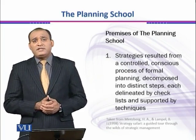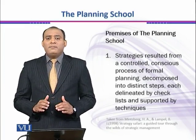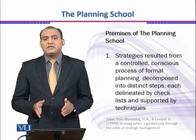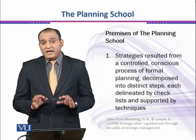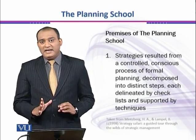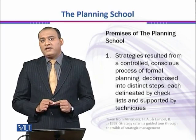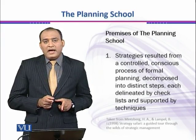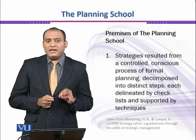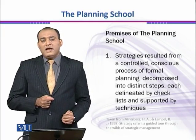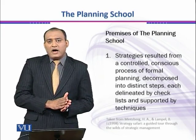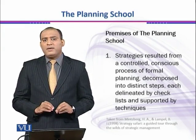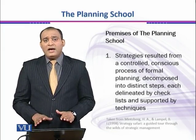For example, the design school only prescribed that there should be a SWOT analysis — the analysis of strengths, weaknesses, opportunities, and threats. Whereas the planning school went into detail and for each part, for example for strengths, it developed a full checklist specifying where strengths will come from. In every organization under the planning approach, you are required to deal with those checklists for all processes. Unless you use those checklists, your planning or strategy development is not considered formal and is not accepted.